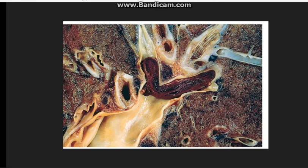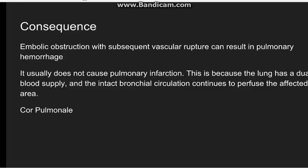This picture shows the saddle embolus present at the bifurcation — we can see the bifurcation and the embolus present over here. As for the consequences of pulmonary embolism: if the embolus occludes a vessel, ideally the area supplied gets necrosed by ischemia and infarction takes place. However, in the case of pulmonary embolism, it doesn't go into pulmonary infarction because the lung has dual blood supply — it also has supply from the bronchial circulation, and therefore infarction doesn't take place.